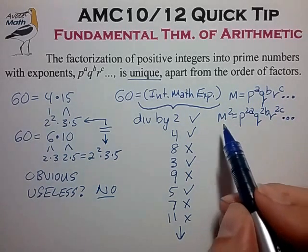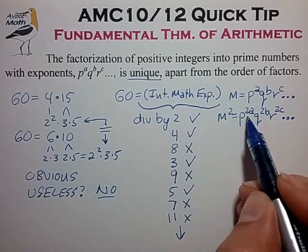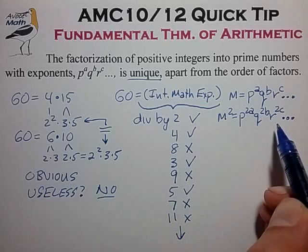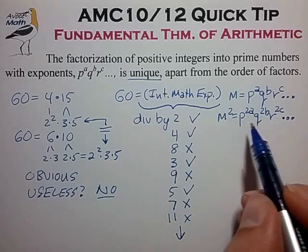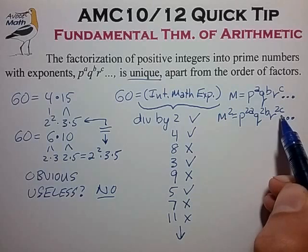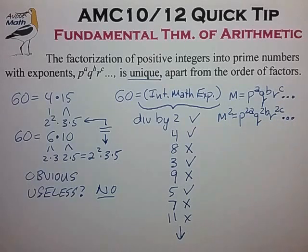So what we know now is that a square number has all even exponents in its prime decomposition. And conversely, if we have a prime decomposition which has all even numbers in the exponents, we know that that's a perfect square. So that's an important observation to make.